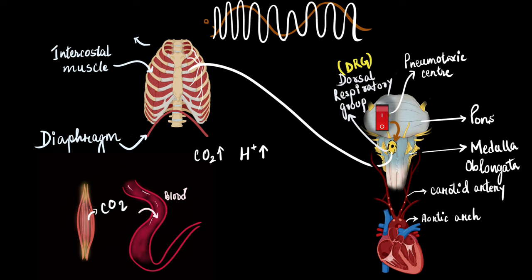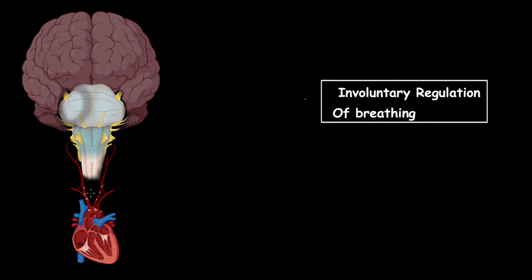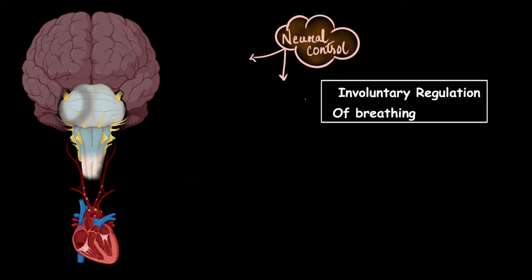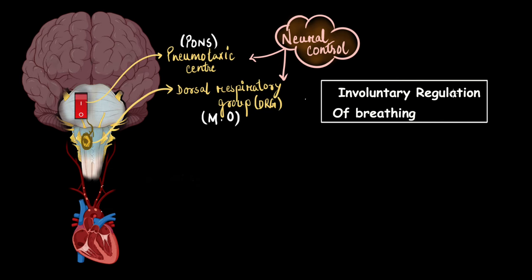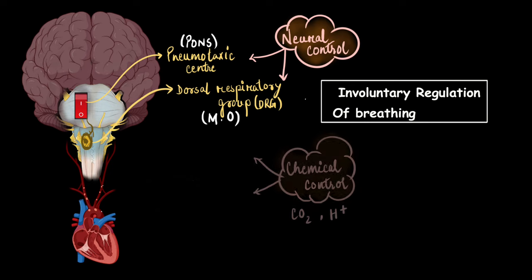So this was all about the regulation of breathing. To summarize: we discussed the involuntary regulation of breathing, and we saw that there is both neural control and chemical control over breathing. For neural control, there are two centers in the lower part of the brain — one in the pons and one in the medulla. The one in the medulla is called the dorsal respiratory group (DRG), which is always switched on. It always fires nerve impulses to the intercostal muscles causing them to contract, and that is how inhalation takes place. To exhale, the pneumotaxic center in the pons switches off the DRG for a short time.